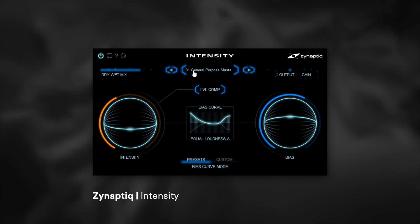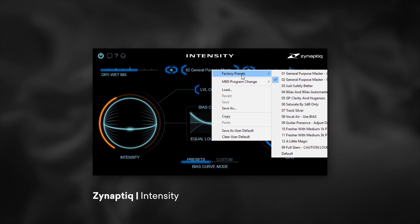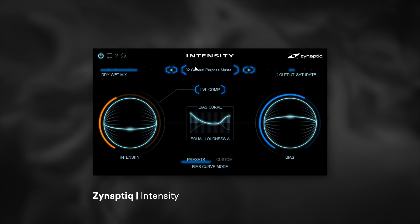If we want to change or browse through the presets, we can click these arrows to the left or the right. If we want to actually choose a preset from the drop-down, you just click the preset name here.